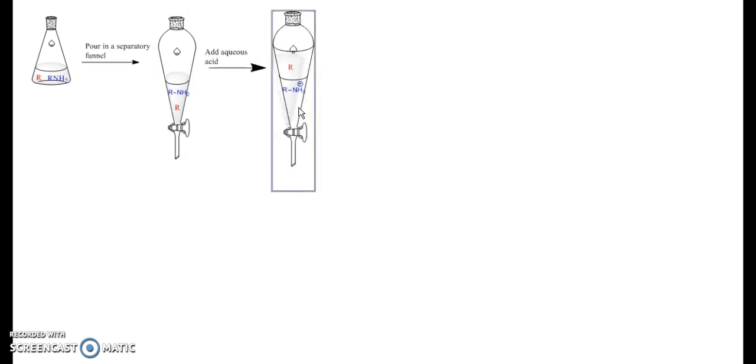And I want to look at an example of this. In this example, we're going to start with a mixture of some neutral organic compound R and some organic base R-NH2. We pour our mixture into a separatory funnel, and then we're going to add some sort of aqueous acid to this compound. When we do this, we get two layers—our aqueous layer down the bottom, our organic layer at the top.